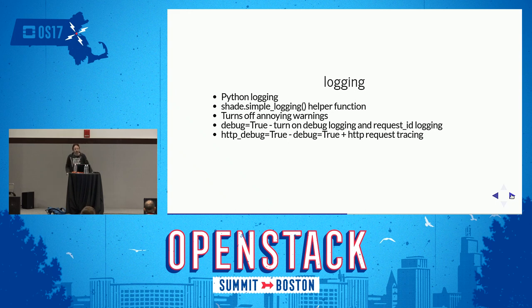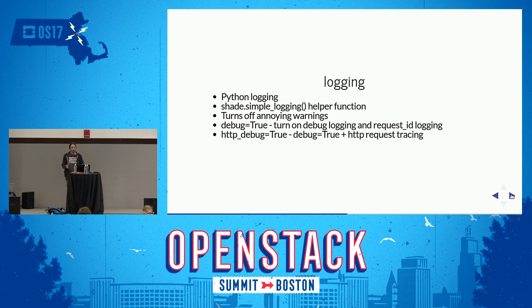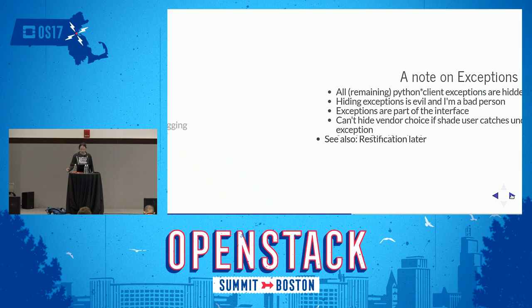There are basically two options to the simple_logging helper: debug=True, which turns on debug logging, and also turns on a separate logger for request IDs. HTTP_debug=True implies debug=True and adds request tracing at the HTTP level — so if you want to see exactly what's going on at the REST interface, it will set that up for you appropriately.